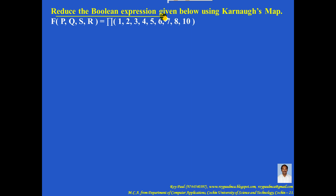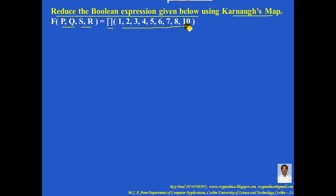Reduce the boolean expression given below using KMAP. F of P, Q, S, R equals π(1, 2, 3, 4, 5, 6, 7, 8, 10).